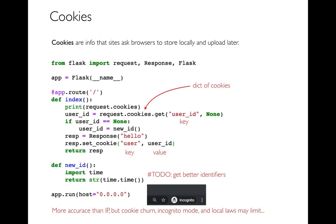Cookies are a pretty good option — more accurate than IP addresses. But there are concerns about where they fall short. One is cookie churn: eventually cookies expire and get new cookies, so you might have tracked somebody for a while and now all of a sudden they seem like a different person. If they switch web browsers or laptops, that also looks like a new user even though it's the same person. If you open something in Chrome's incognito mode, cookies won't be uploaded. And recently there have been local laws that limit your ability to track people without informed consent — especially in the European Union. You can get in trouble if you don't tell people you're using cookies and get their permission. It's a tricky issue with international law that's always evolving.